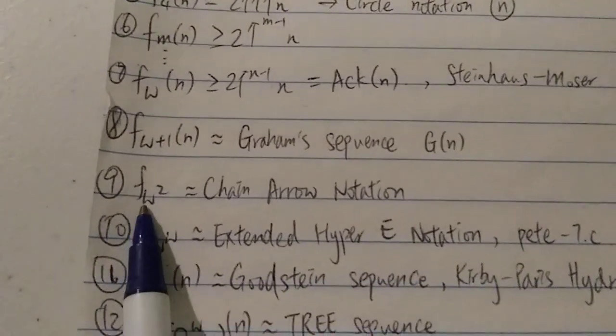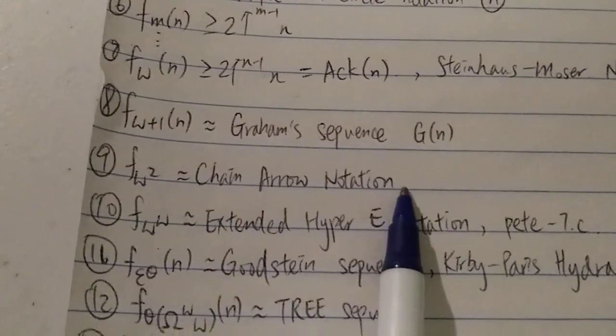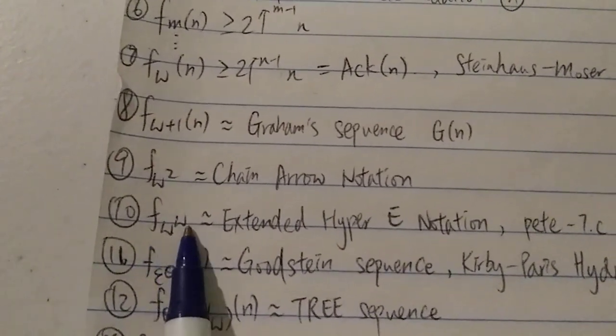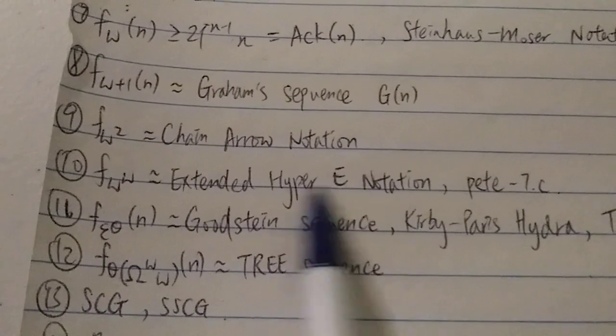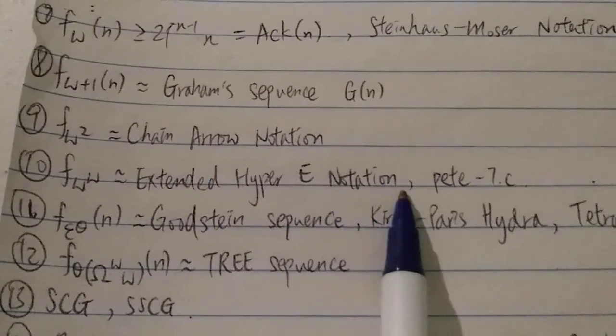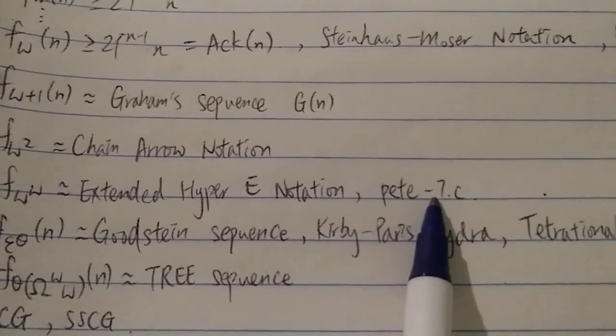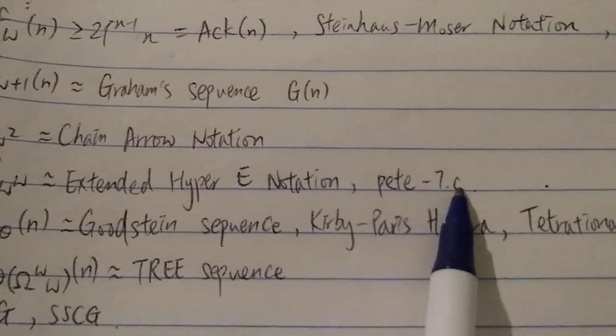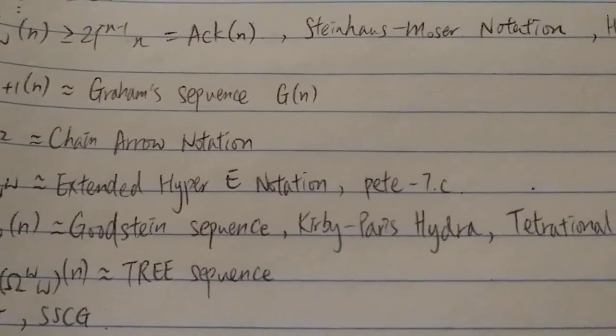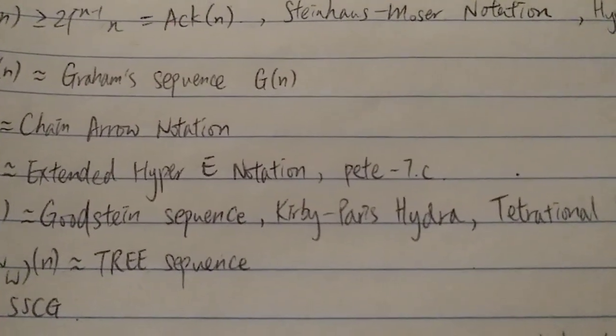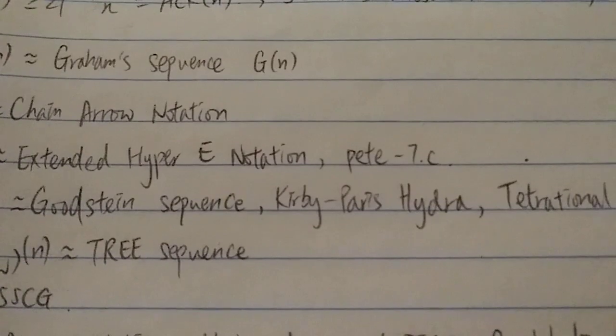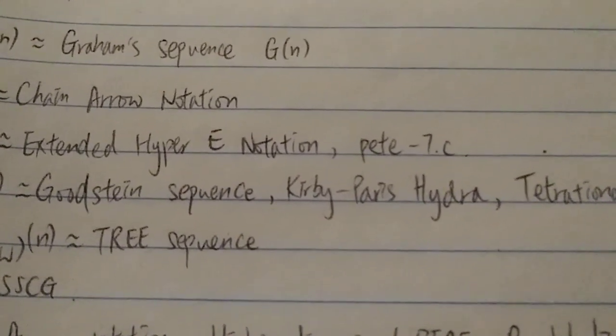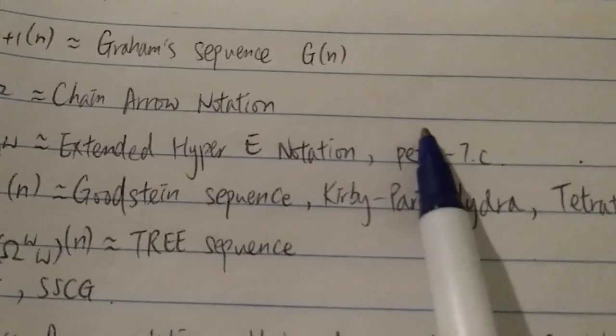And next, we have F_{ω²}(n), which we have the chain arrow notation. And next, we have F_{ω^ω}(n), which we have the extended hyper-E notation. And also this program over here, which is the third place of the loader's function competition. So in that competition, basically, people are trying to have the biggest output from a C program, which is defined by 212 characters or less. And this is the third place finish.